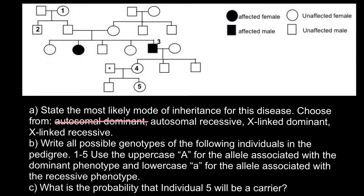Can it be X-linked dominant? In an X-linked dominant situation, males would be affected and females would be unaffected, but we see that this female is affected. If she got this X-linked dominant disorder from her mother's side, her mother would also be affected. And if she got it from her father's side, her father would also be affected because he has only one X chromosome. So this is not X-linked dominant.